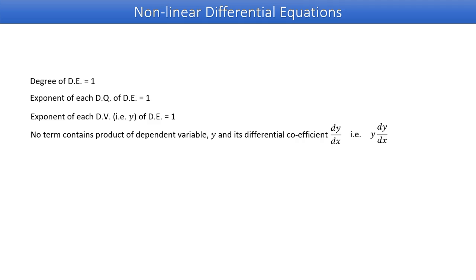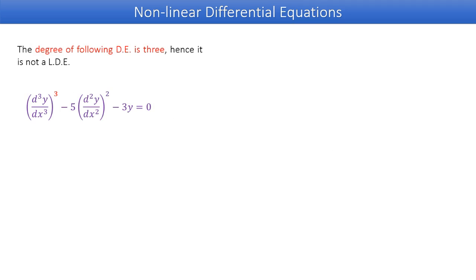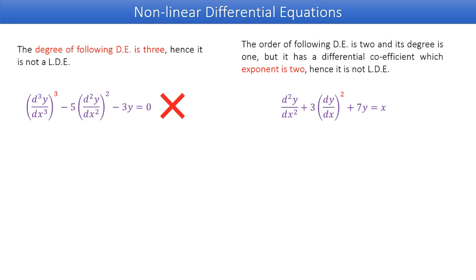For example, in this differential equation, the degree of the first term and second term are three and two respectively, hence it is not a linear differential equation. In this equation, the degree of the second term is two, hence it is not a linear differential equation.